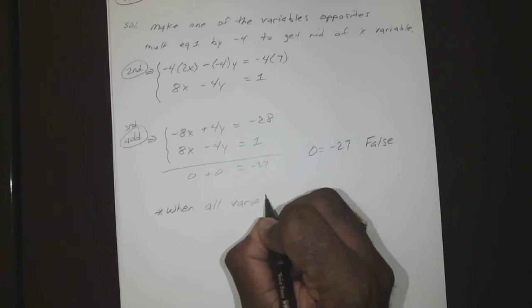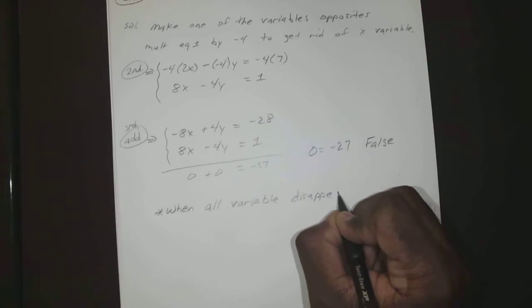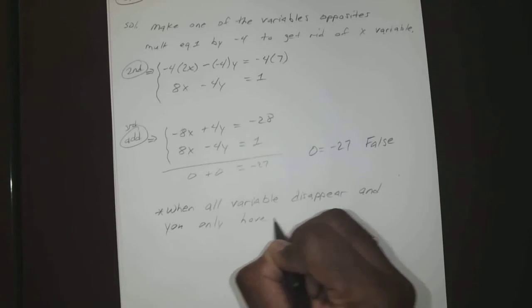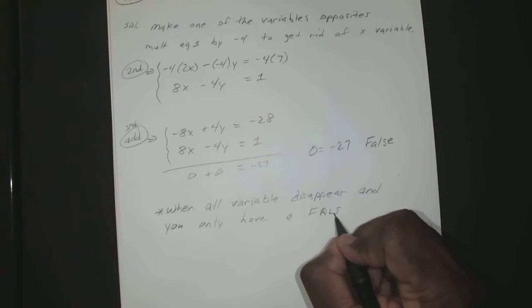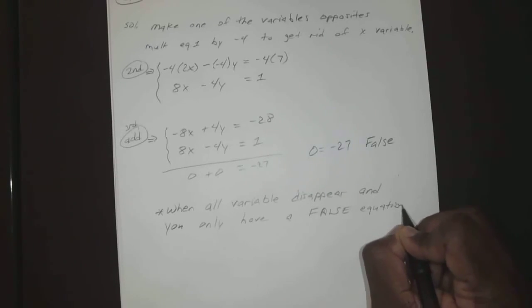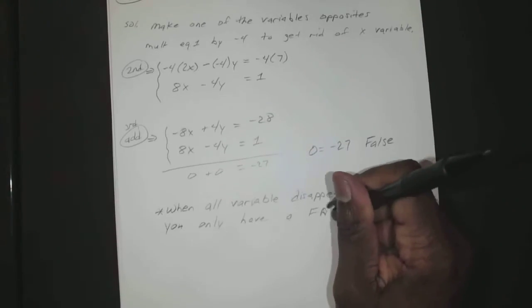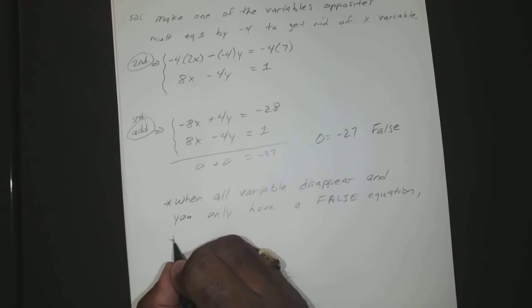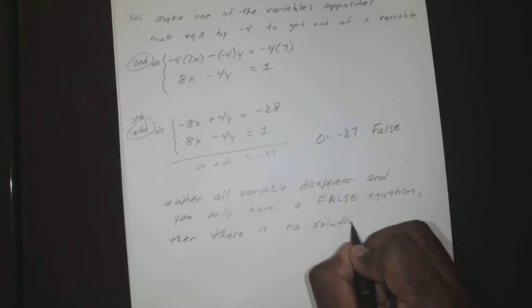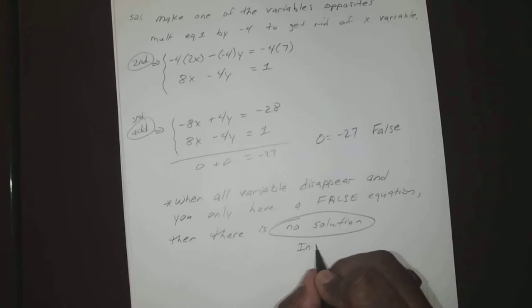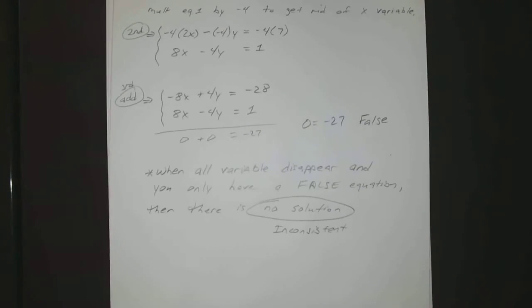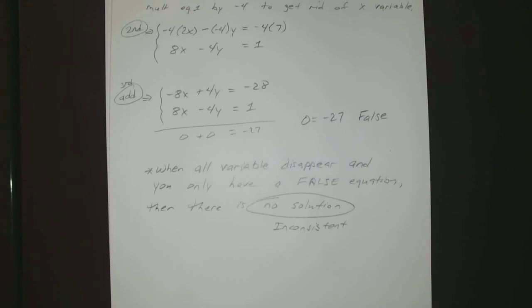So when all variables disappear and you are left with a false equation, then there is no solution or inconsistent. All right, any questions on that one?